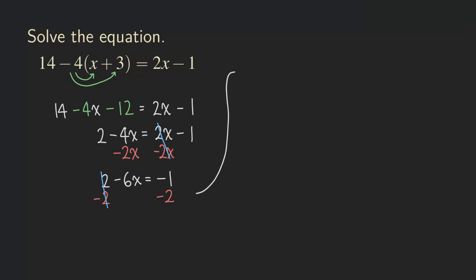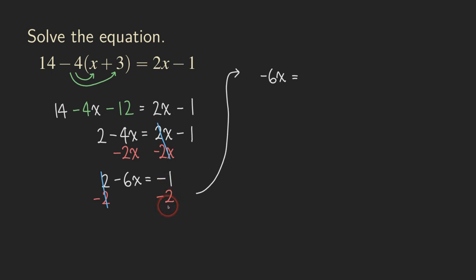So let's continue with our calculation right here. On the left side of the equation, we are going to get just the negative 6x. And that's equal to — now what do we have here? Negative 1 minus 2, or you can just treat it as negative 1 plus negative 2. Either way, you are going to get negative 3.